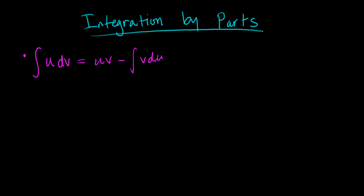In this video we're going to do another u-substitution example. Let's do the integral of t times e to the negative 3t dt.